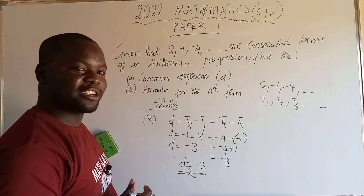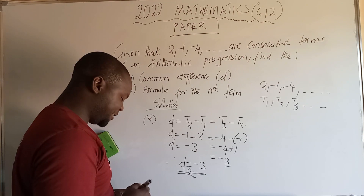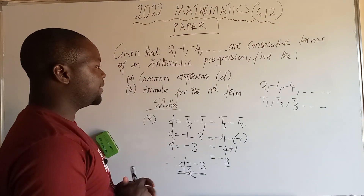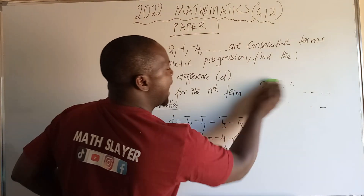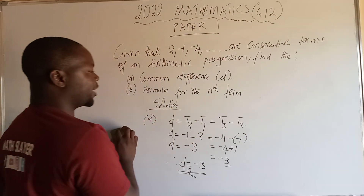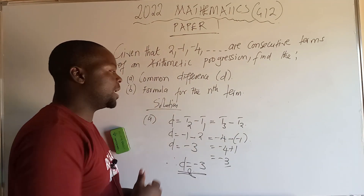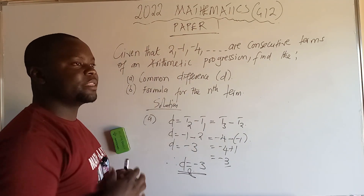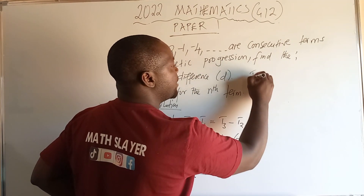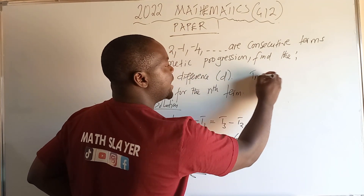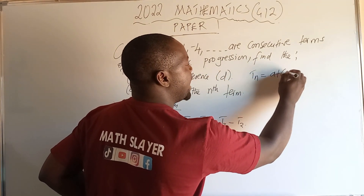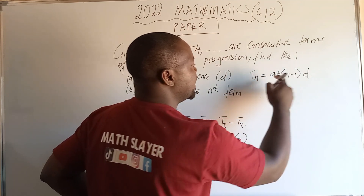So we've seen how to calculate the common difference. Let's go to question B, which says find the nth term. We need to come up with a formula for the nth term. The formula is: Tn equals A plus (n minus one) times D.